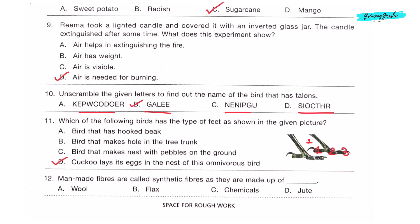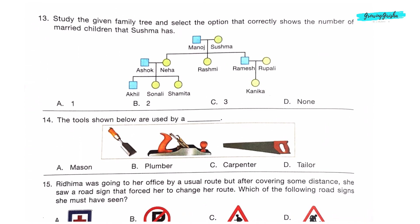Question 12: Man-made fibers are called synthetic fibers as they are made up of chemicals. Option C. Question 13: Study the given family tree and select the option that correctly shows the number of married children that Sushma has. Sushma has three children: Neha, Rashmi and Ramesh. Neha is married to Ashok and Ramesh is married to Rupali. Rashmi is not married. So there are two children of Sushma who are married. Option B is the correct answer.